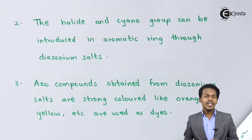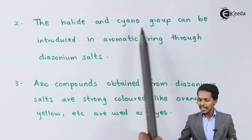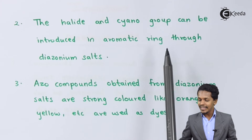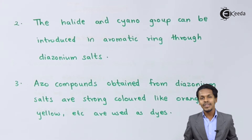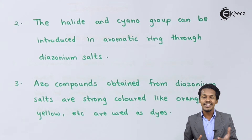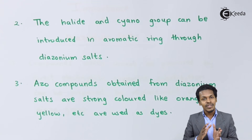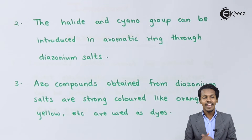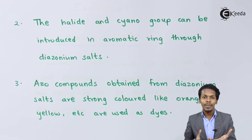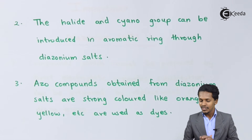The next point is that halides and cyano groups can be introduced in the aromatic ring through diazonium salts. Obviously, the halide group or the cyano group cannot be introduced directly on benzene, and that's why the electrophilic substitution reaction cannot happen easily. So we first consider the benzene diazonium salt and then proceed further to obtain an aromatic halide or cyanobenzene.